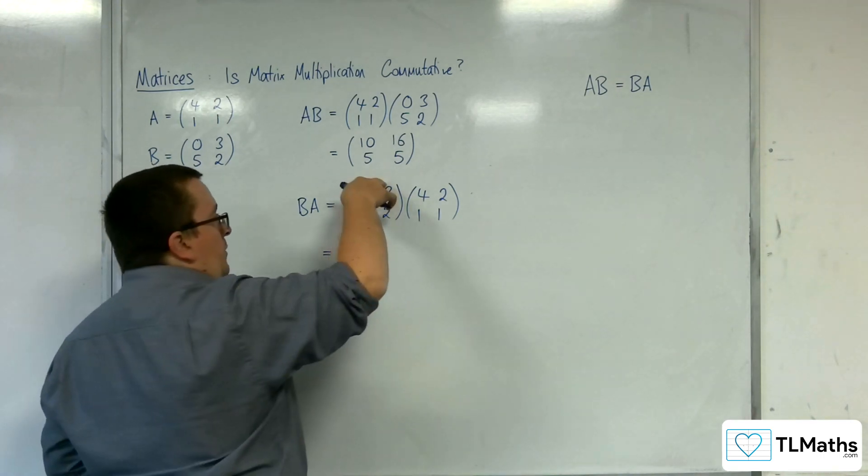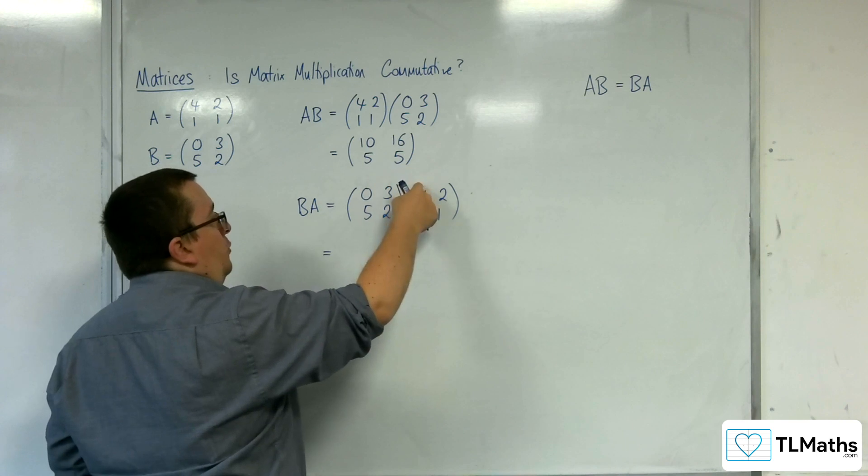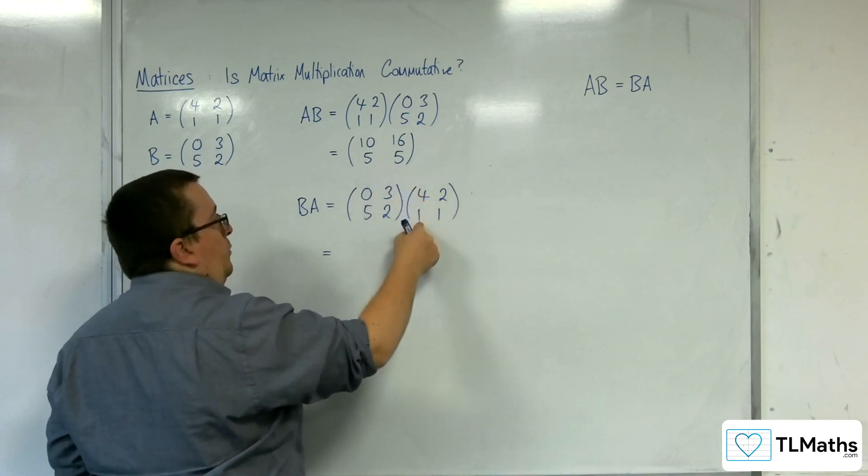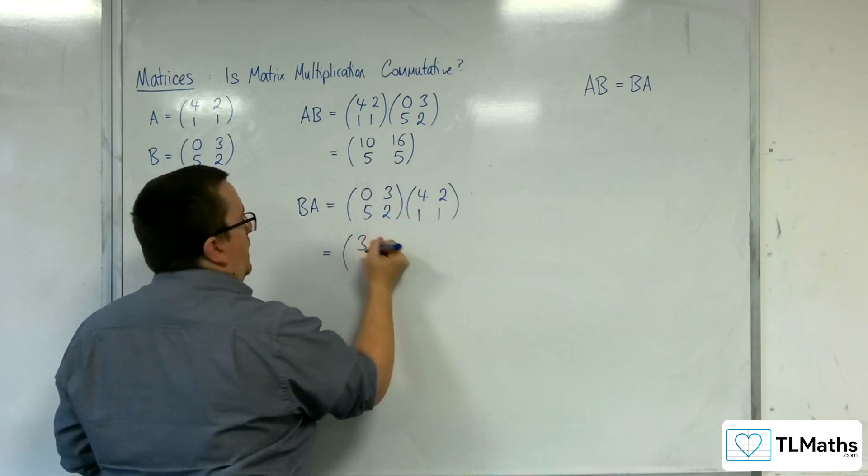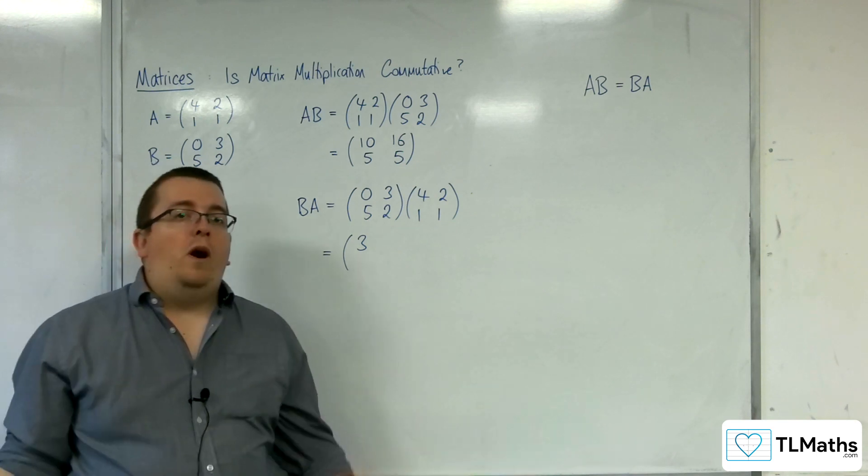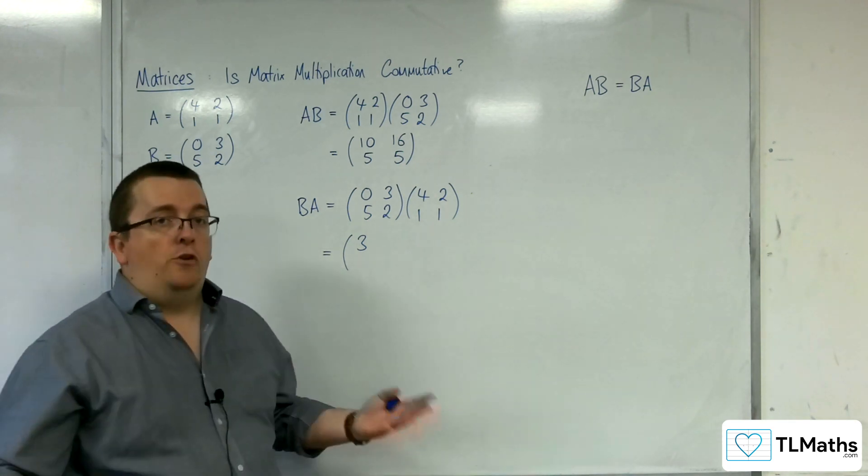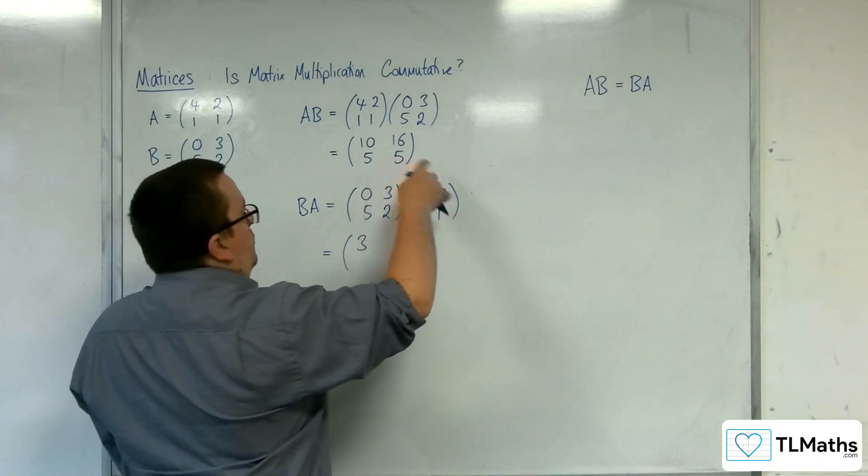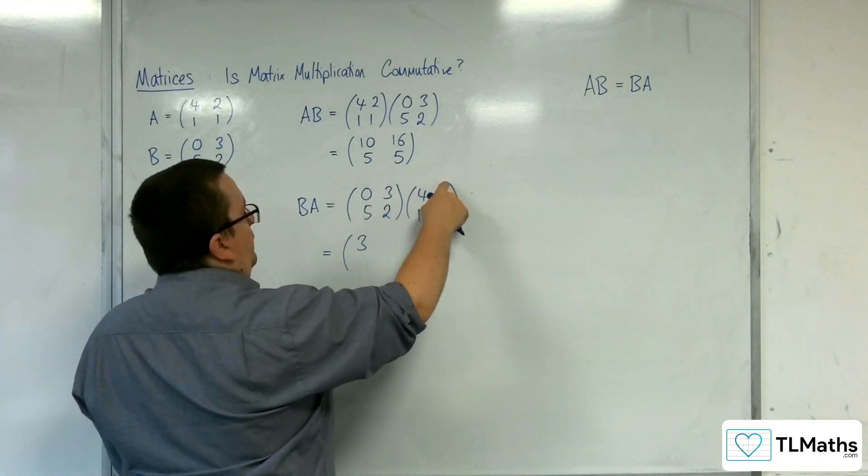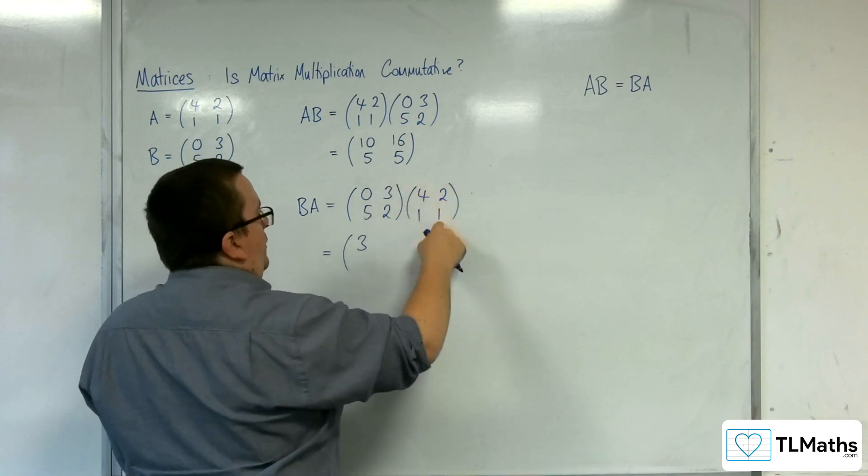So we have 0,3 multiplying with the 4,1. 0 lots of 4 is 0, 3 lots of 1 is 3. So already with just one entry in this matrix, I can see that these two matrices are not the same. 0,3, 2,1. So 0 lots of 2 is 0, 3 lots of 1 is 3.